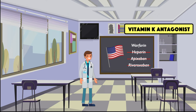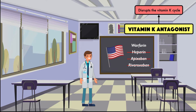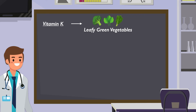Warfarin is unique as the only vitamin K antagonist that's currently being used. As a vitamin K antagonist, warfarin disrupts the vitamin K cycle. We obtain the majority of our dietary vitamin K from leafy green vegetables like broccoli, spinach, and kale.